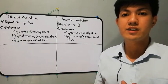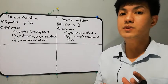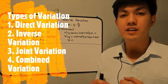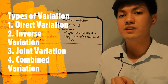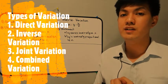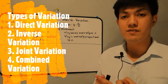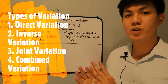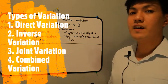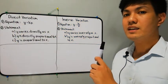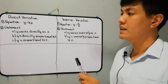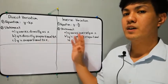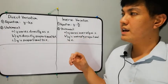After learning the definition of variation, let's jump to the types of variation. We have four types: number one is direct variation, number two is inverse variation, three is joint variation, and four is combined variation. For now, we're just going to deal with direct variation and inverse variation. I decided to combine them because they are just the exact opposite of each other, so later on it will be easier to understand them.